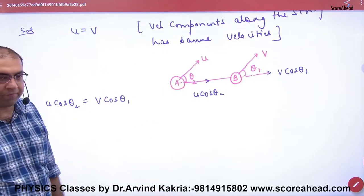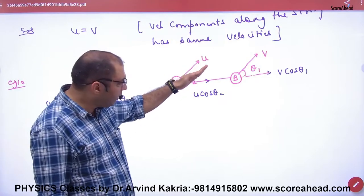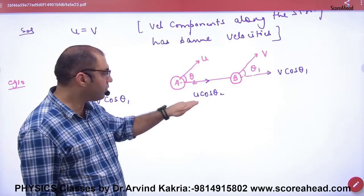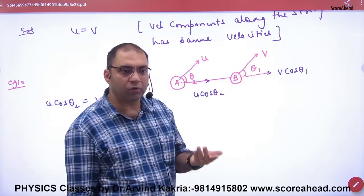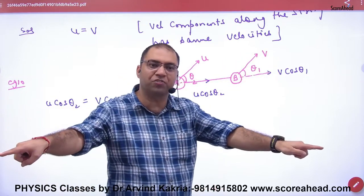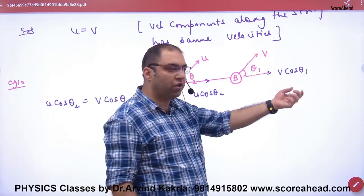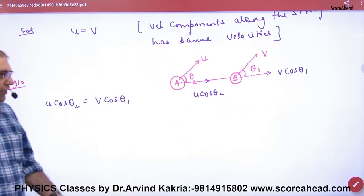This concept, U string along velocity component U cos theta 2. This V string along, what will V cos theta. So string along velocity same, so what will V cos theta is equal to U cos theta 2, answer.